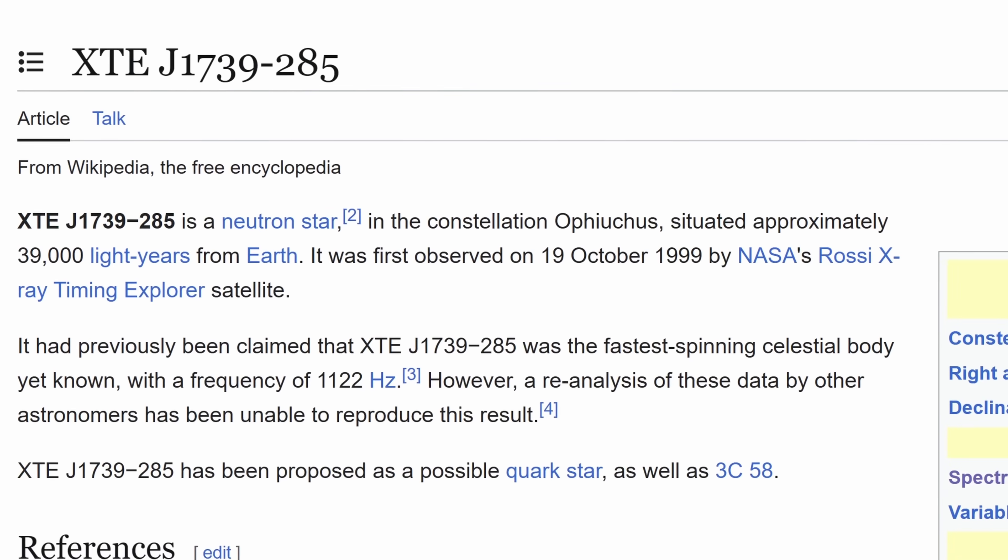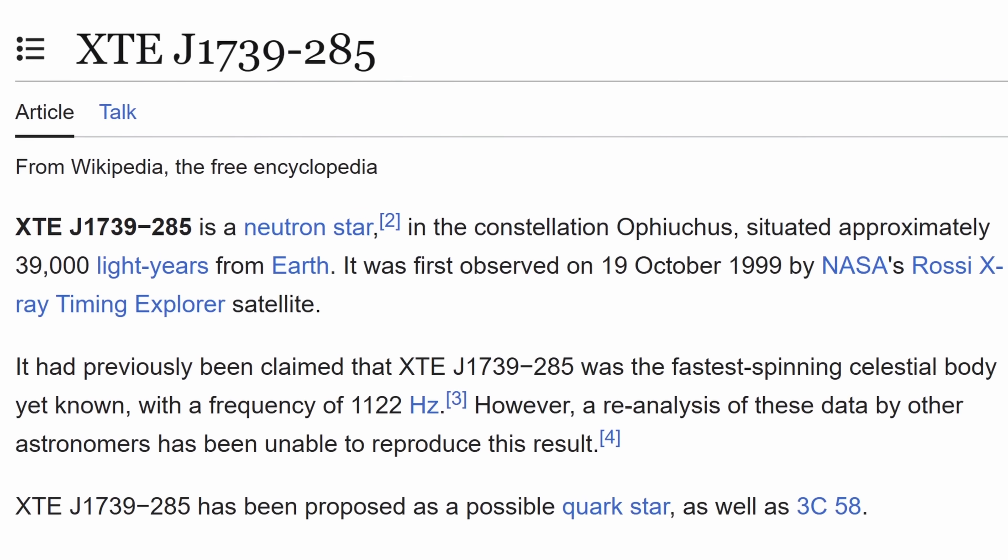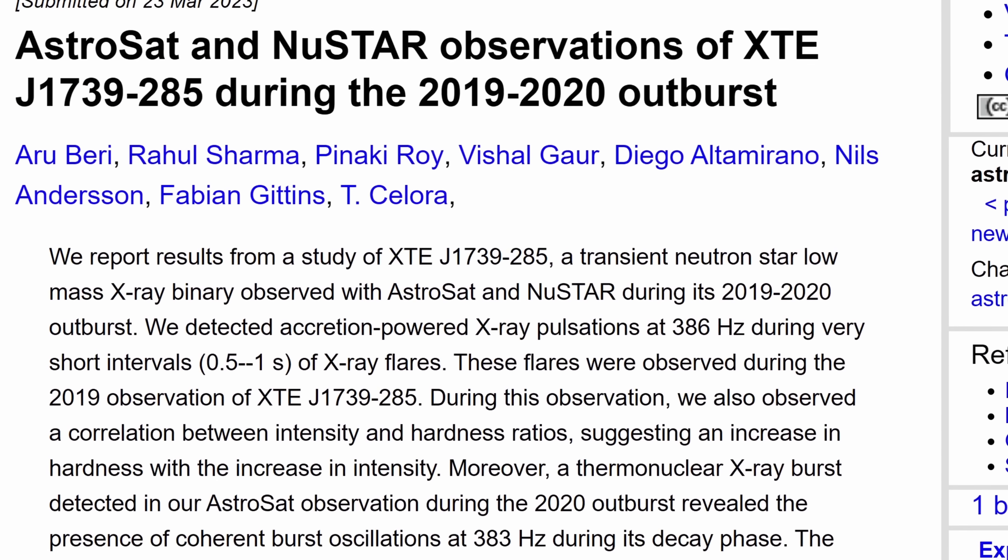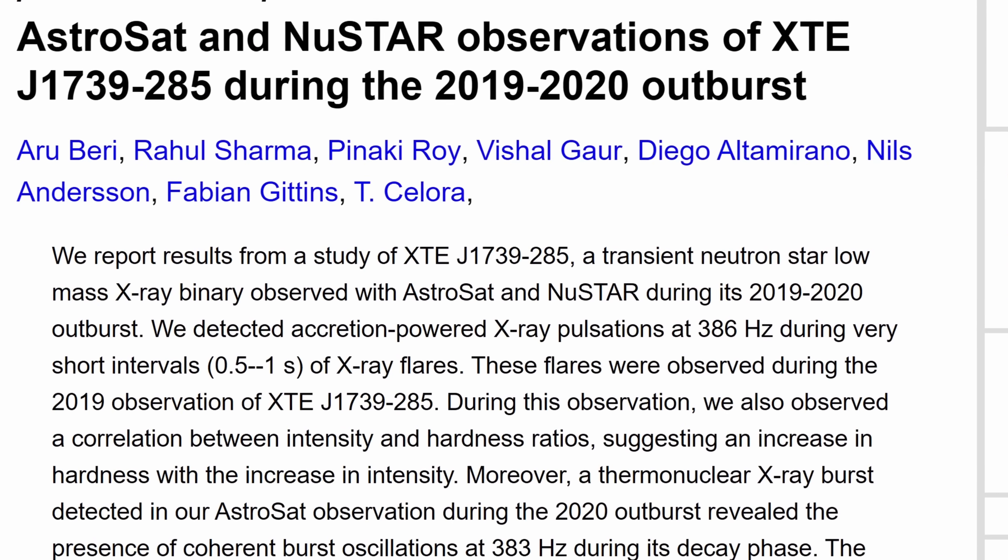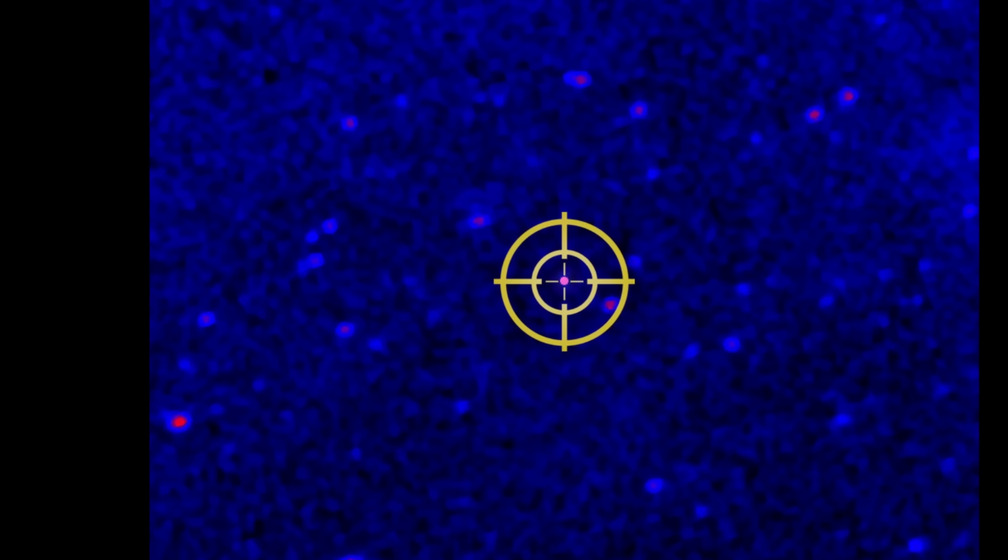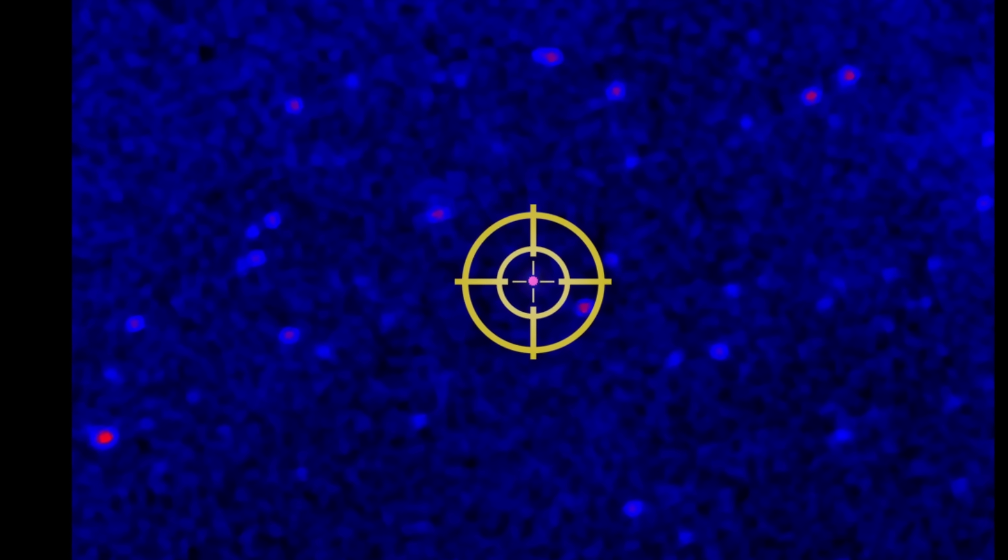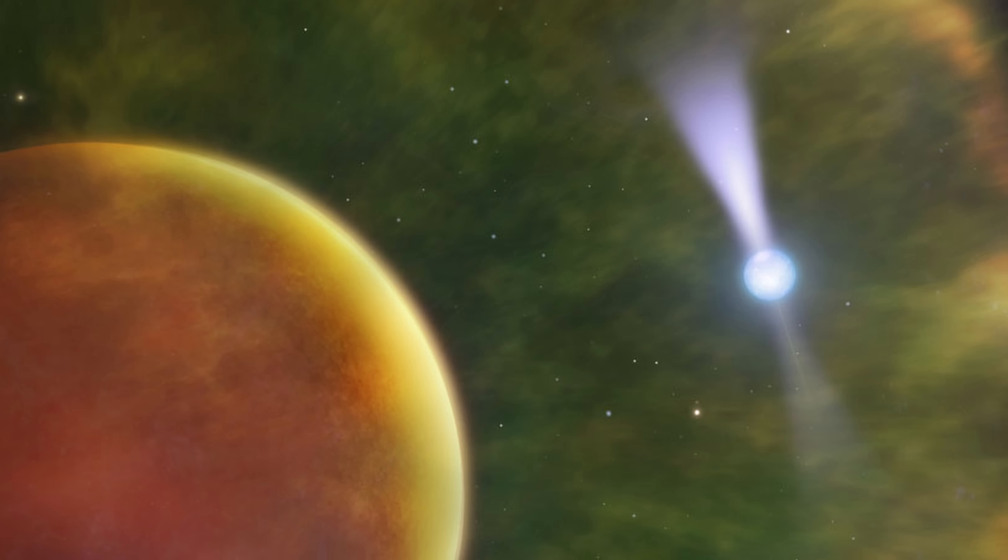But a much more recent re-analysis from just a year ago actually discovered that it seems to be only spinning at 380 Hertz, so just above that limit produced by the acceleration from the accretion disk. And so here this is unlikely to be the case, to be a record fast-spinning object. You can learn about this in one of the studies in the description.